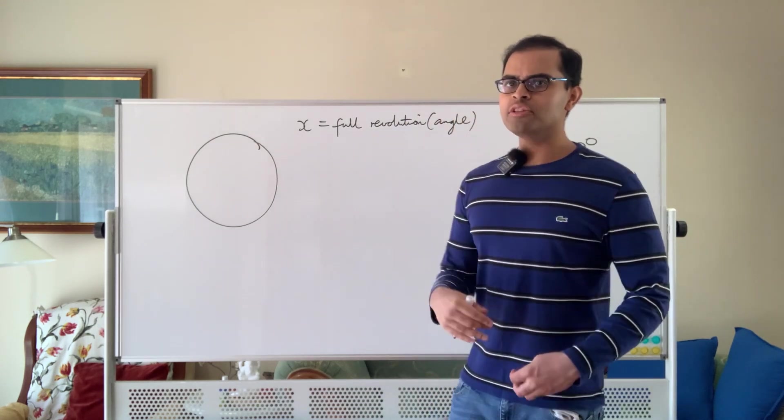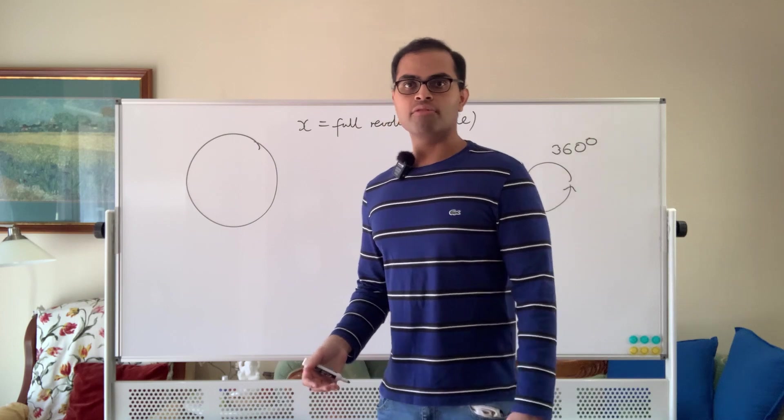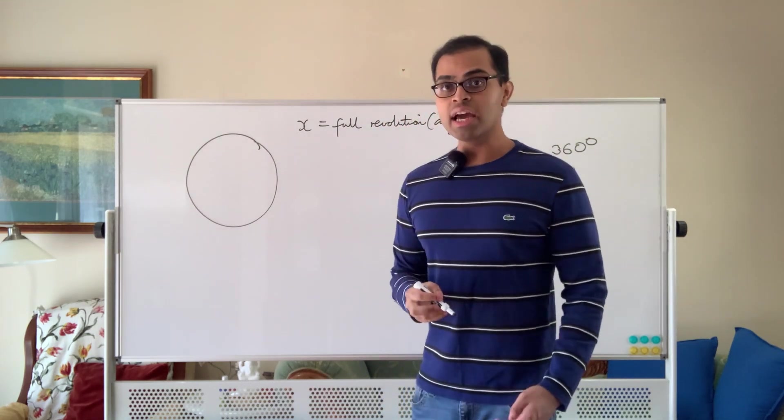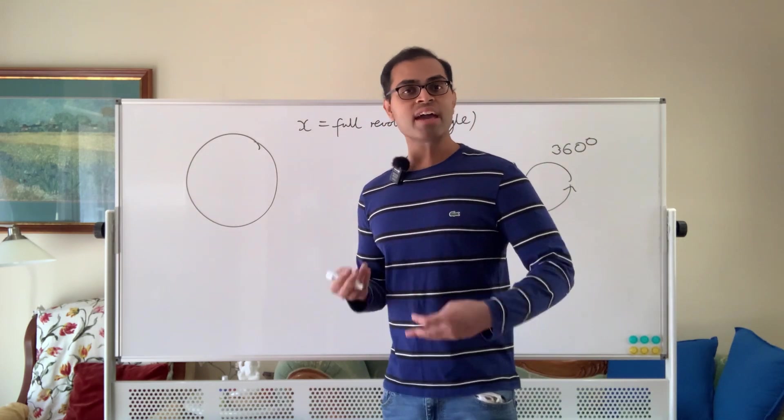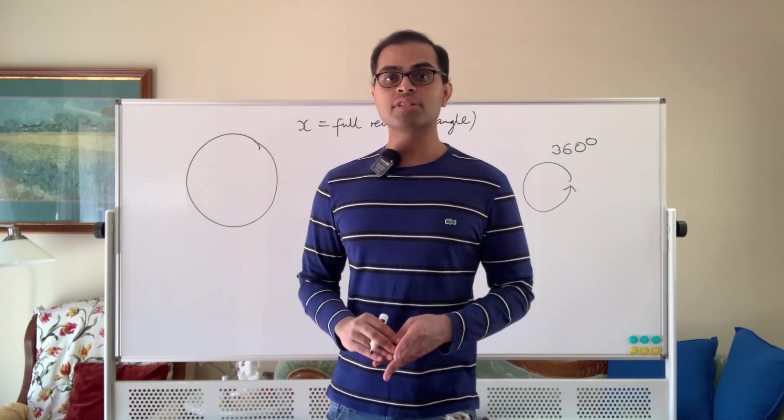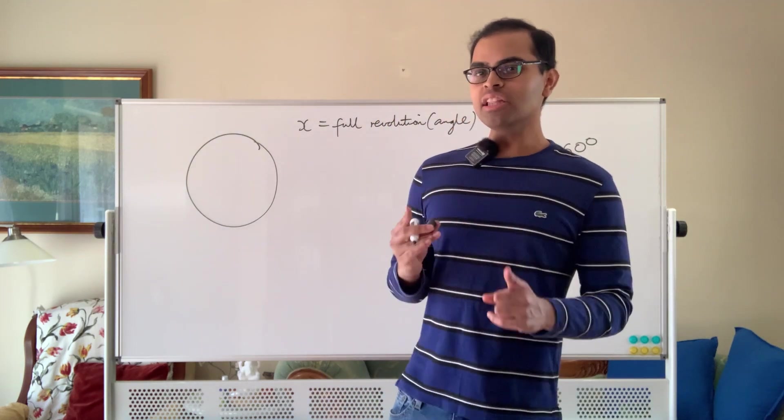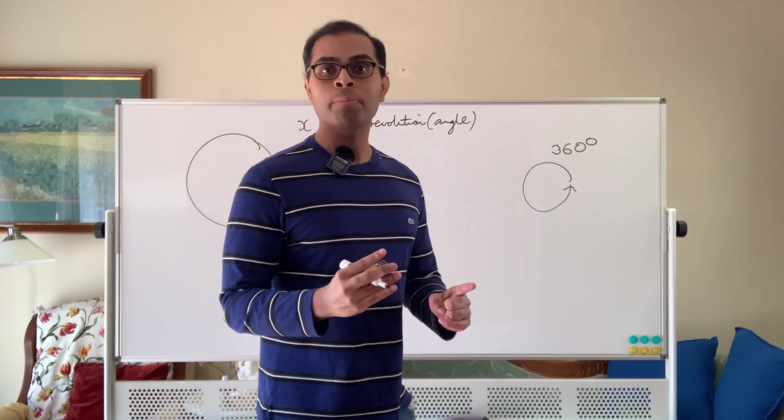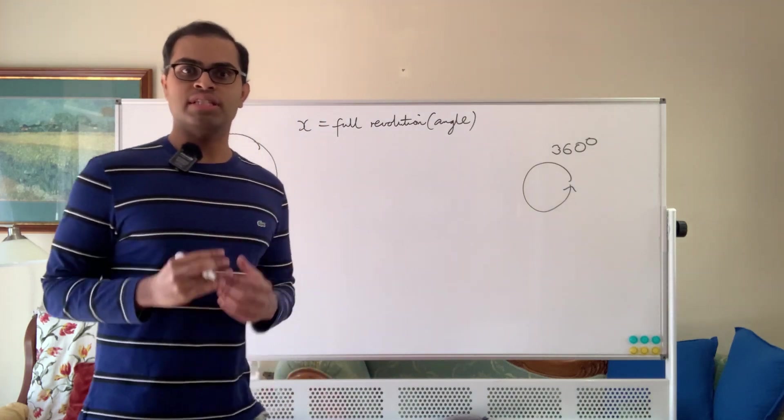We also want x to be divisible by other small numbers. For example, it'd be nice if x is divisible by three, x is divisible by four, five, six, as many numbers as possible that are small. And actually, if we do this, we naturally come up to saying that x has to be 360 degrees.